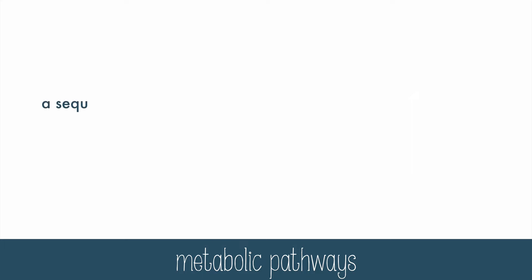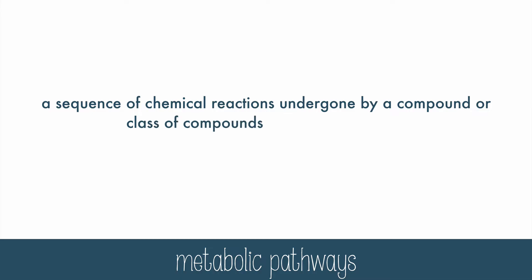In living things, enzymes are used constantly to transform one chemical into another. It is very rare, however, for this transformation to take only one step. Typically, there's a pathway with many small steps involving many different enzymes along the way. Metabolic pathways are a sequence of chemical reactions undergone by a compound or class of compounds in a living organism.